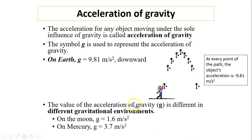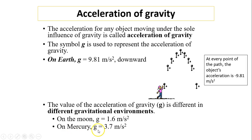The value of acceleration of gravity, little g, is different in different gravitational environments. We talked about g being 9.81 on Earth's surface. But on the Moon, g equals 1.6. On Mercury, g is 3.97 meters per second squared.